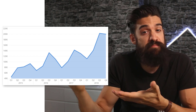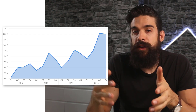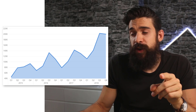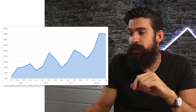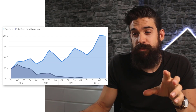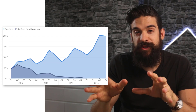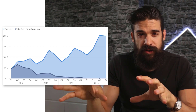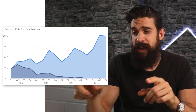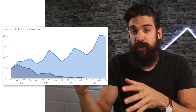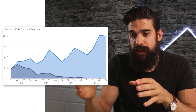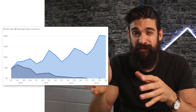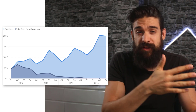And it looks pretty good — you see it's exponentially going up over time. However, if we add the total sales for new customers to this visualization, you see that something concerning is going on, because the total sales of new customers is going down. So that means most of our sales are coming from old customers.